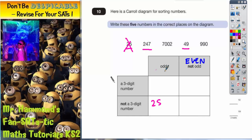247. Well, we've already said it's odd and it is three digits. So 247 has got to go there. Cross it off.